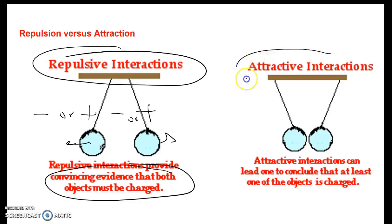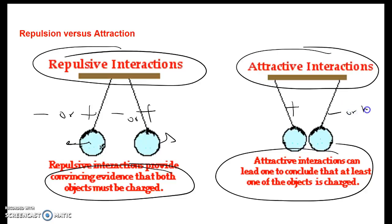Now, attractive interactions are different. One of them, and this is important, at least one of them may be charged. This could be charged positive, but we don't know about this one. It could be negative or it could be neutral because neutral will attract a charge. So when we see attractive interactions, we always have to account for the neutral charge on one of the objects.